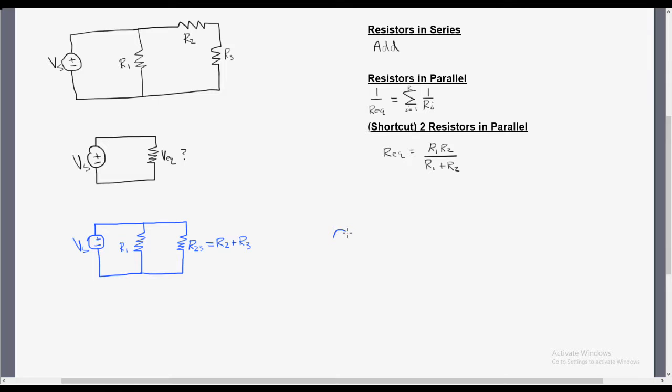Now that we have two resistors in parallel, we can redraw the circuit in its final form. The equation for this resistor will be the parallel combination of R1 and R23.